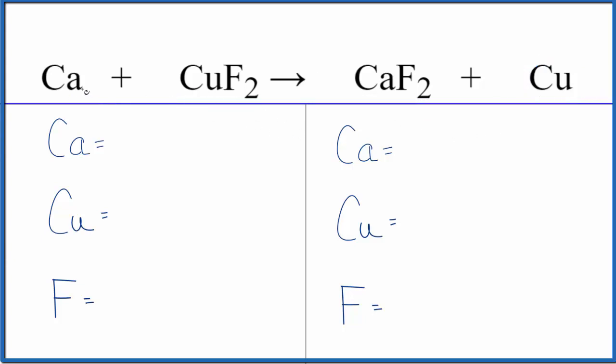We want to balance the equation. We have one calcium, one copper, and two fluorines in the reactants. In the products, we have one calcium, two fluorines, and one copper.